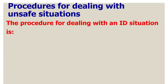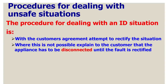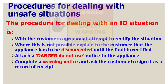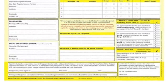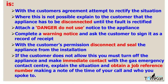The procedure for dealing with an ID situation: with the customer's agreement, attempt to rectify the situation. Where this is not possible, explain to the customer that the appliance has to be disconnected from the gas supply until the fault is rectified. Attach a danger do-not-use notice to the appliance. Complete a warning notice and ask the customer to sign it as a record of receipt. With the customer's permission, disconnect and seal the appliance from the installation using appropriate fittings. If the customer does not allow this, turn off the appliance and make immediate contact with the emergency contact centre, explain the situation, and obtain a job reference number noting the time you called and who you spoke to.